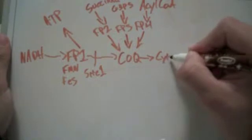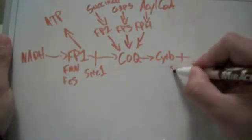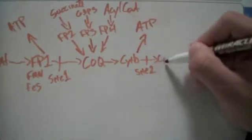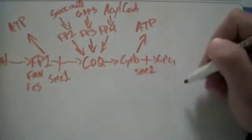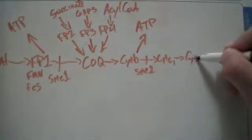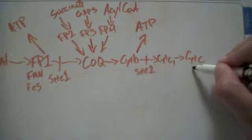From CoQ, CoQ is going to be transporting the electrons to cytochrome B. This is site number two. What happened at site one? We had an ATP. So, ATP. Site two brings that to cytochrome C1, which then will bring us to site C.